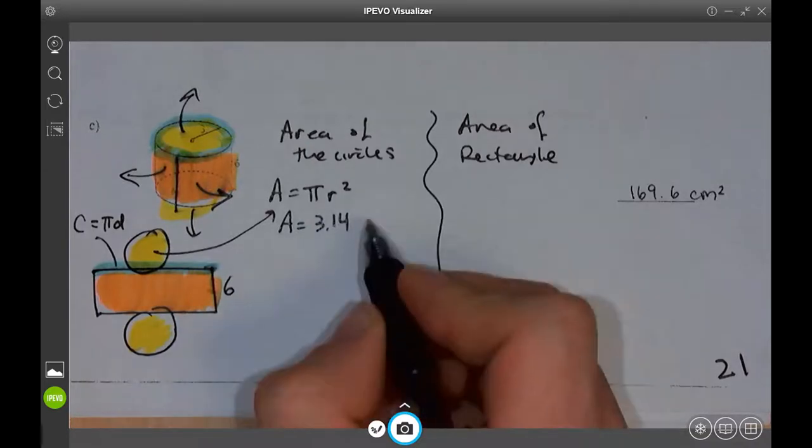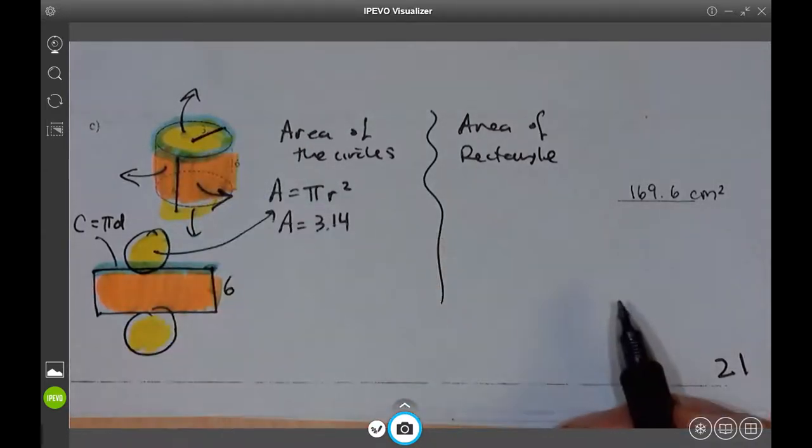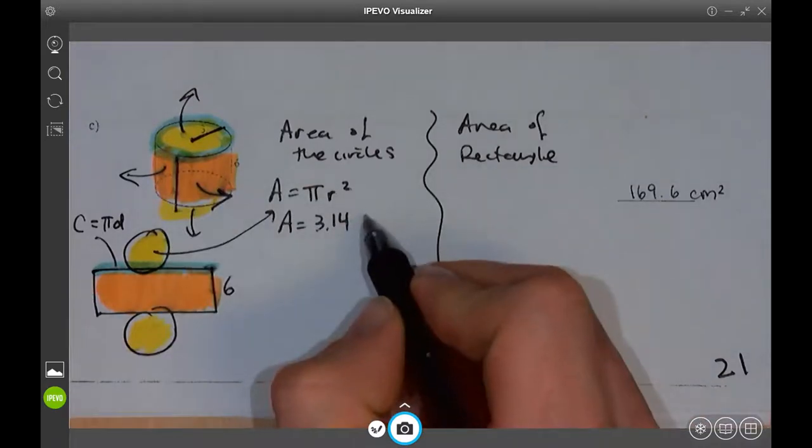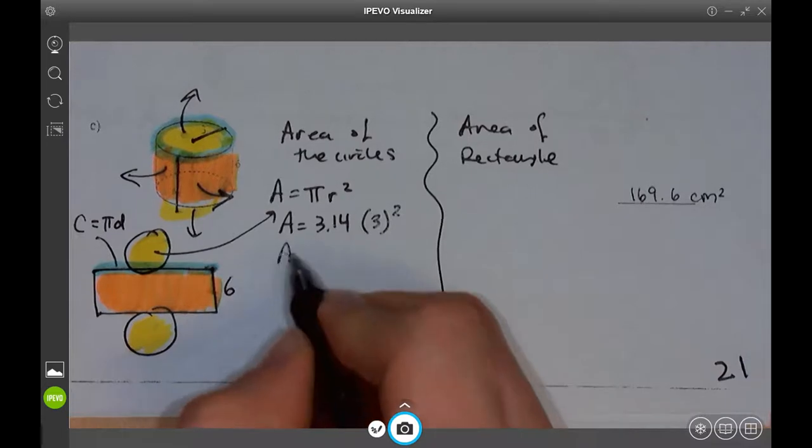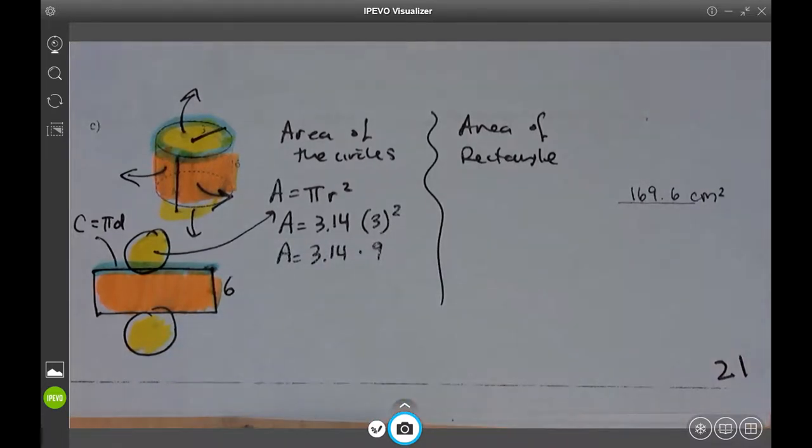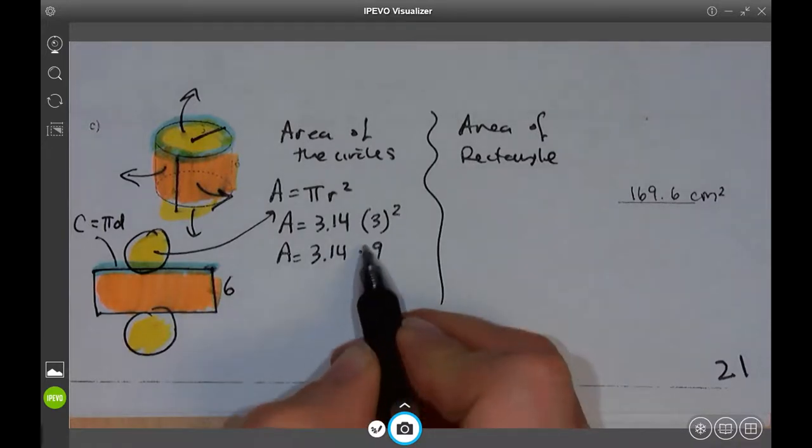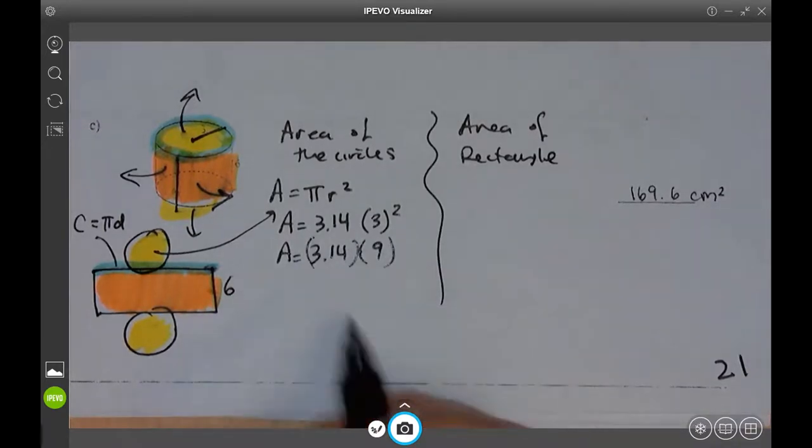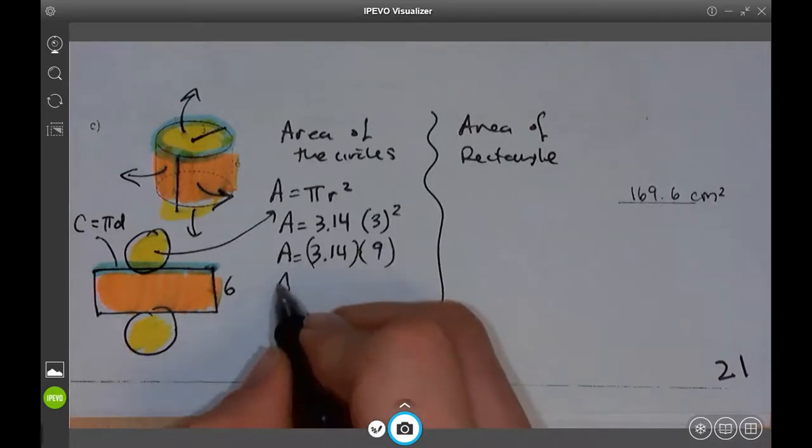For radius, that's the distance from the middle to the outer edge of the circle. And as you can see, it's 3. So 3 squared. What's 3 squared? 9. That's another symbol for multiply. There's a little dot. But sometimes we put them in brackets. Anyway, 3.14 times 9. Put that in a calculator.